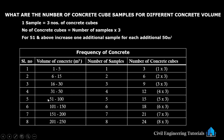Now for the number of concrete cubes in the extended ranges: for 51 to 100 cubic meters, five samples, so five multiplied by three equals 15 cubes. For six samples, six multiplied by three equals 18 cubes. For seven samples, seven multiplied by three equals 21 cubes. And for eight samples, eight multiplied by three equals 24 cubes.